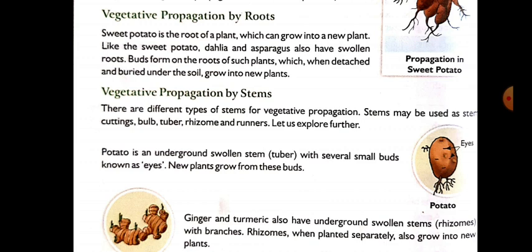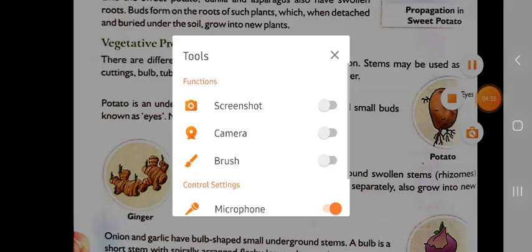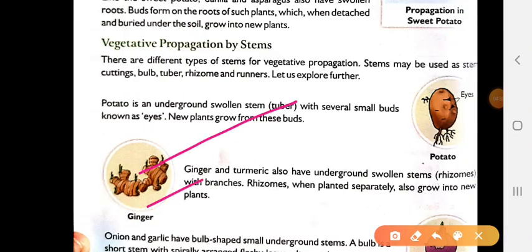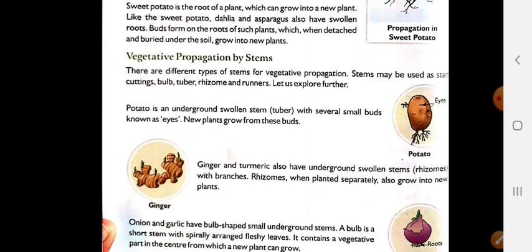Next comes vegetative propagation by the stems. Some plants grow into new plants from their stems. For example, sugarcane — we take a sugarcane stem, put it into the soil, and it will grow. There are also special stems which have some buds on them. These buds grow into a new plant when they are put into the soil and given proper conditions for germination.